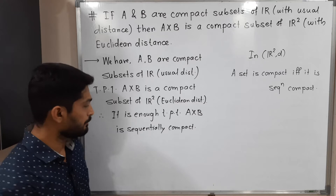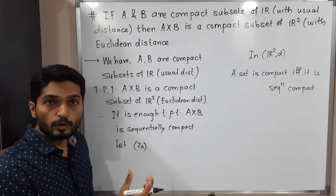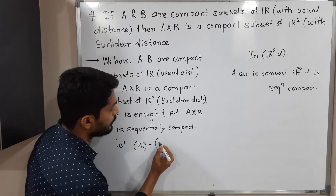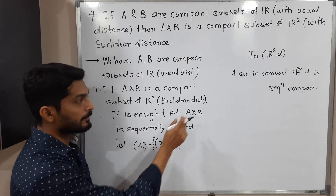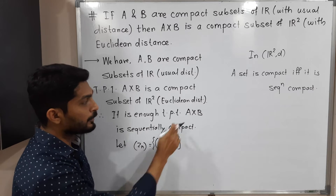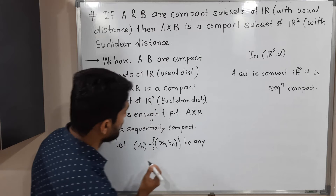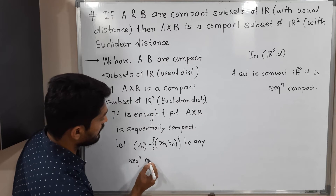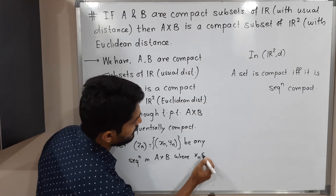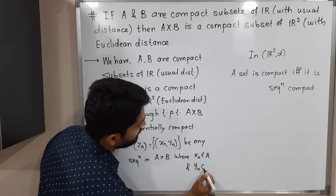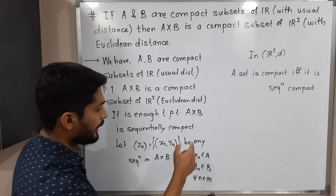Let us take a sequence z_n in A×B. Then z_n looks like (x_n, y_n), where x_n belongs to A and y_n belongs to B, for all n in the set of natural numbers.